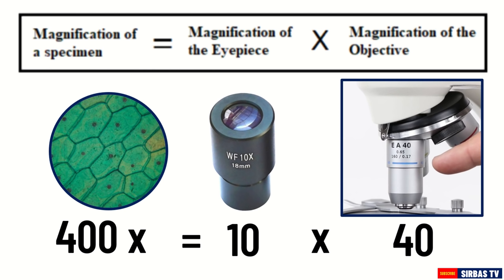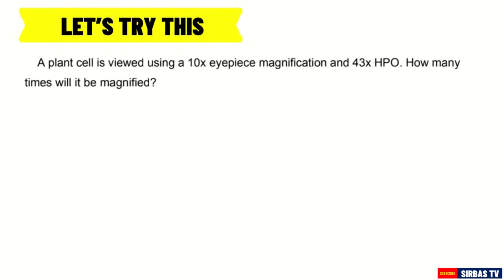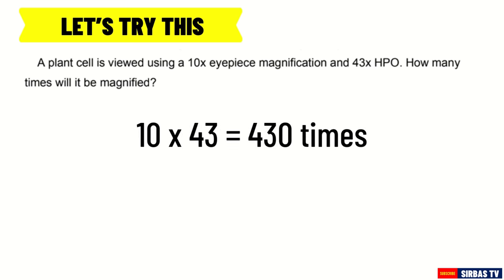The microscope is really amazing — through it, we can understand life even better. Now let's try to solve this problem: A plant cell is viewed using a 10x eyepiece magnification and a 43x high power objective. How many times will it be magnified? The plant cell is magnified 430 times. We simply multiply the eyepiece magnification of 10 times by the objective magnification of 43 times, which gives 430 times.